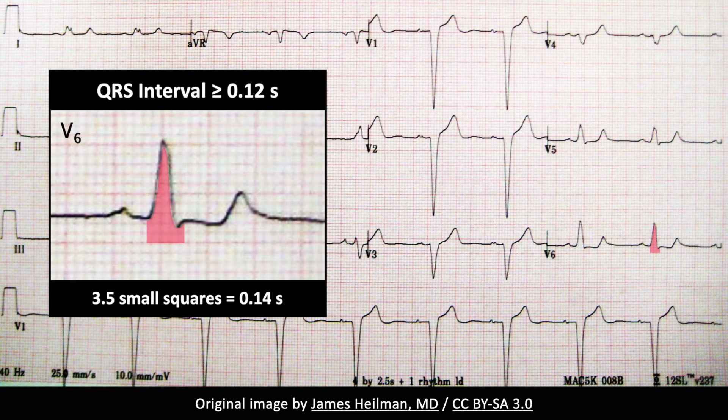The fundamental electrocardiographic finding of bundle branch block is a wide QRS complex. In adults, complete bundle branch block is present when the QRS complex is 120 milliseconds or greater in duration. On an ECG with a standard paper speed of 25 millimeters per second, this translates to a QRS complex that is three small squares or wider.